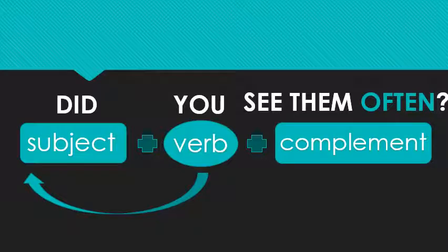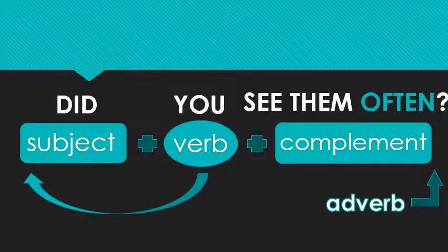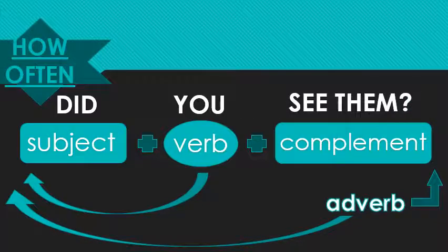One more example: 'Did you see them often?' Often is not an adjective — it's an adverb, an adverb of time. If I want to ask 'how often,' I'm looking for more information: once a week, once a year, never — more than just yes or no. Since it's an adverb, we just bring it to the front of the line. We don't have to worry about an optional noun. So: 'How often did you see them?'